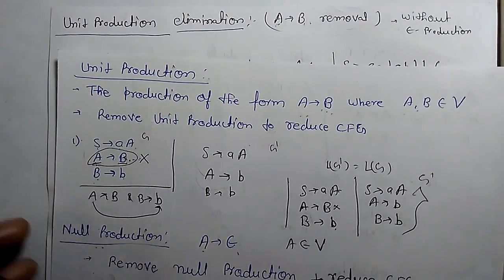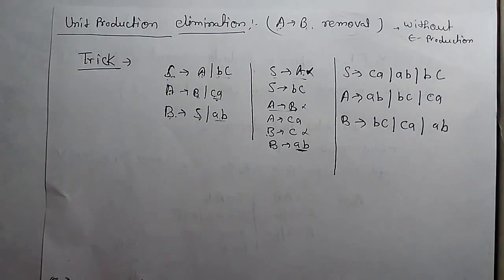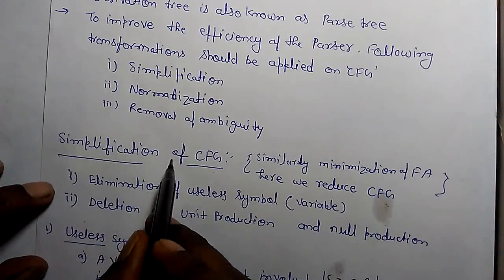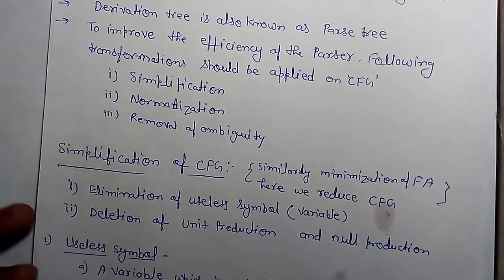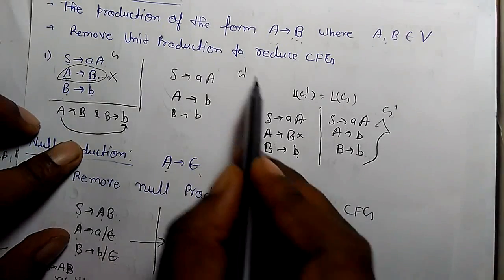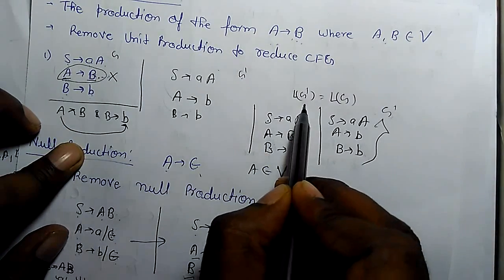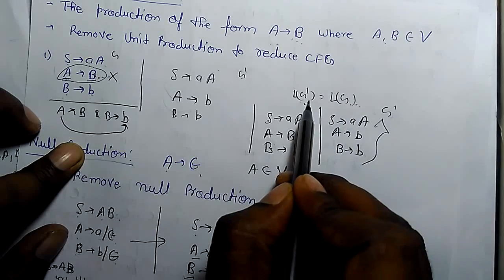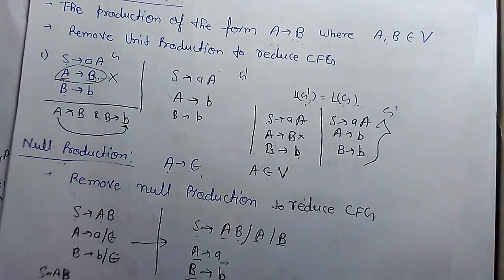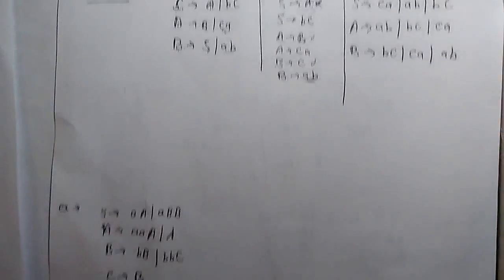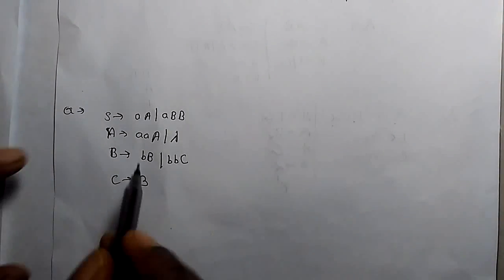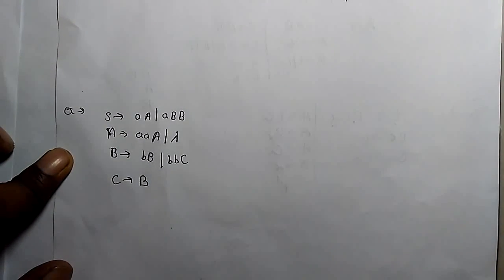Most important for simplification of context free grammar: if we get a new grammar G dash, the language generated from both grammars should be equivalent. This is very important. There is one question where we have to remove null production, unit production and useless symbols.